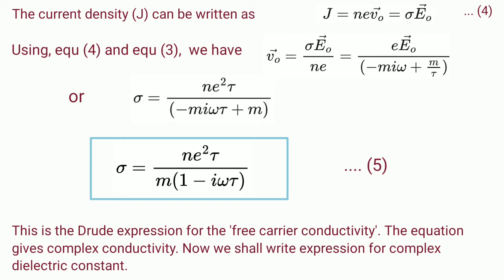Using equation 4 and equation 3 we have v₀ = σE₀/(ne) = eE₀/(-miω + m/τ), which upon simplification gives σ = ne²τ/m(1 - iωτ). This is the Drude expression for the free carrier conductivity. The equation gives complex conductivity. Now we shall write expression for complex dielectric constant.